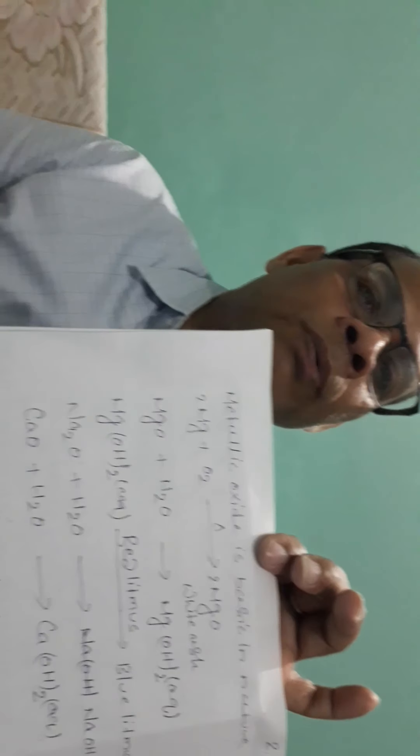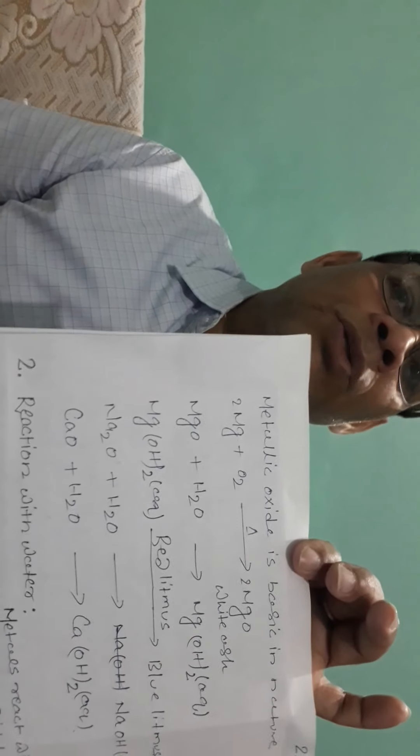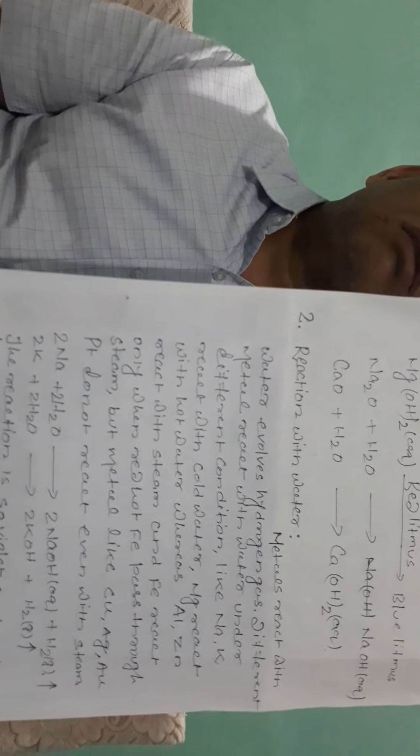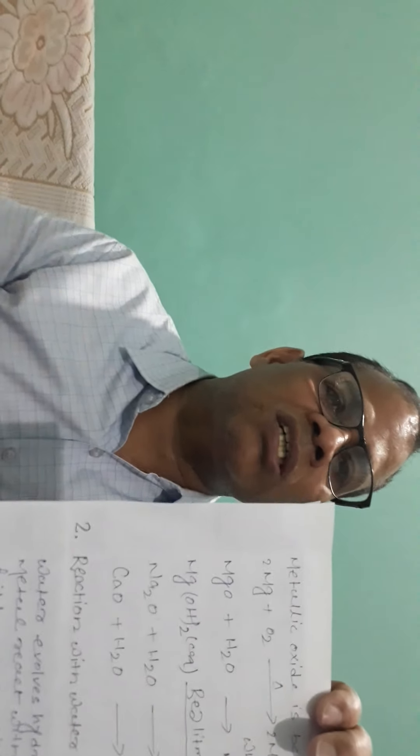Next chemical property: metal reacts with water. The reactivity varies from metal to metal. Sodium and potassium react with cold water; calcium also reacts with cold water. Magnesium, aluminium, and zinc do not react with cold water — they need steam. However, magnesium can also react with boiling water, while aluminium and zinc react with steam.